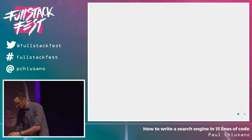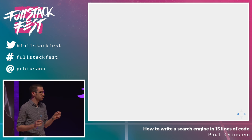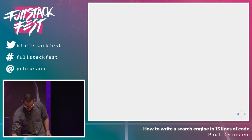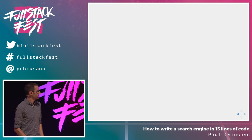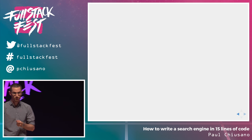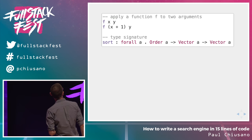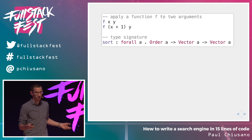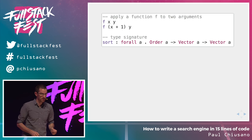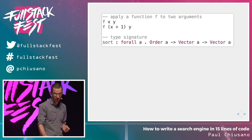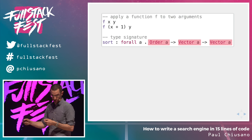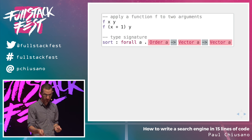Unison is a statically typed, purely functional programming language — probably most similar to Haskell. It has a magic power: we can transport an arbitrary Unison value to another Unison node. Just some basic syntax: you apply a function to arguments by listing the function name and then the arguments separated by spaces. Type signatures look a little different — here's the type signature for a sort function: it takes an ordering of `a`, a vector of `a`, and returns a vector of `a`, with arguments and results separated by arrows.